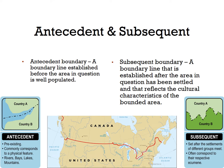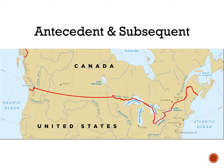Let's start with perhaps the easiest to define. An antecedent boundary is a boundary line established before the area in question is well populated. 'Ante' means before. Since these invisible lines were established before an area is well populated, human characteristics tend to be less influential on the boundary. However, the lines may follow a known physical feature such as mountains or rivers, or maybe a line of latitude or longitude. The boundary between the western portions of the United States and Canada, from Minnesota to the Pacific Ocean, were established along the 49th parallel before there were many people living in this area.